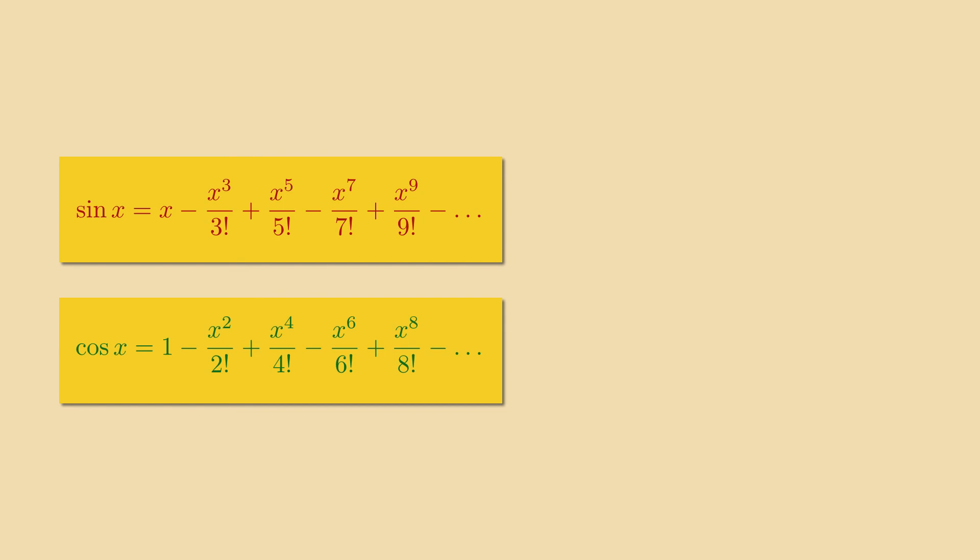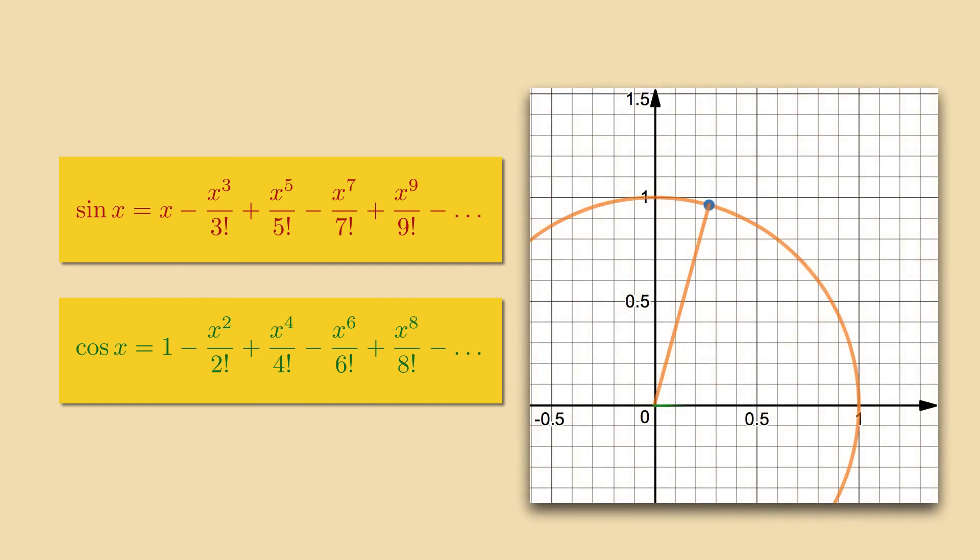But before I leave you, the series of sine and cosine have quite a nice geometric meaning. If you plot their terms as vectors in the unit circle, they form a rectangular spiral that closes in on the exact point with coordinates sin of x, cos of x. There's a link in the doobly-doo to a Desmos page where you can play around with this.